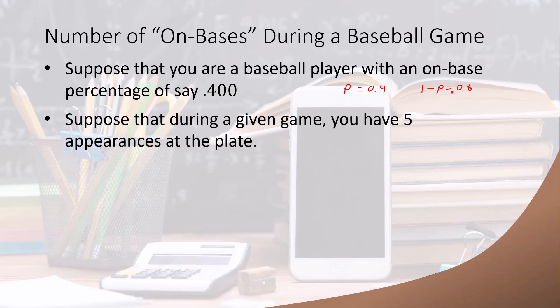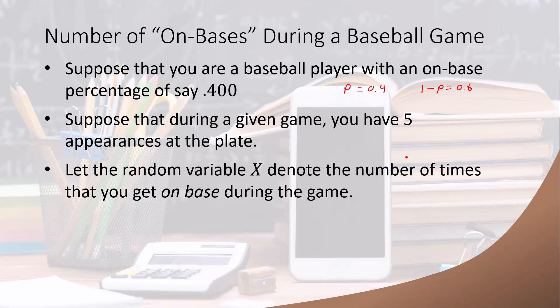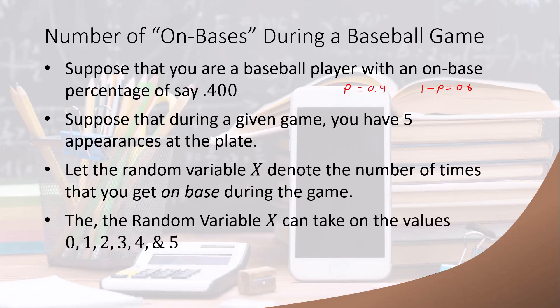Now let's suppose you're in a game where you have a lot of appearances at the plate — let's say you have five appearances. Let's define the random variable X as the number of times you get on-base during that game. You have five at-bats, and X is the number of times you get on-base. The random variable can take on six different values: X can be 0, 1, 2, 3, 4, or 5.